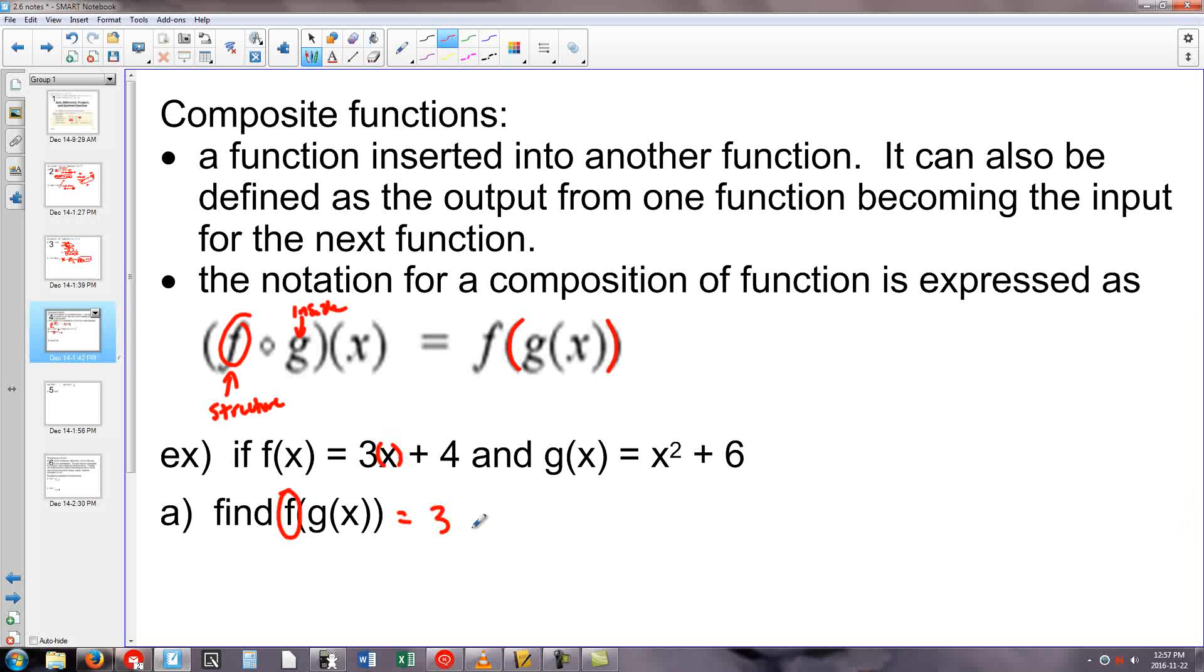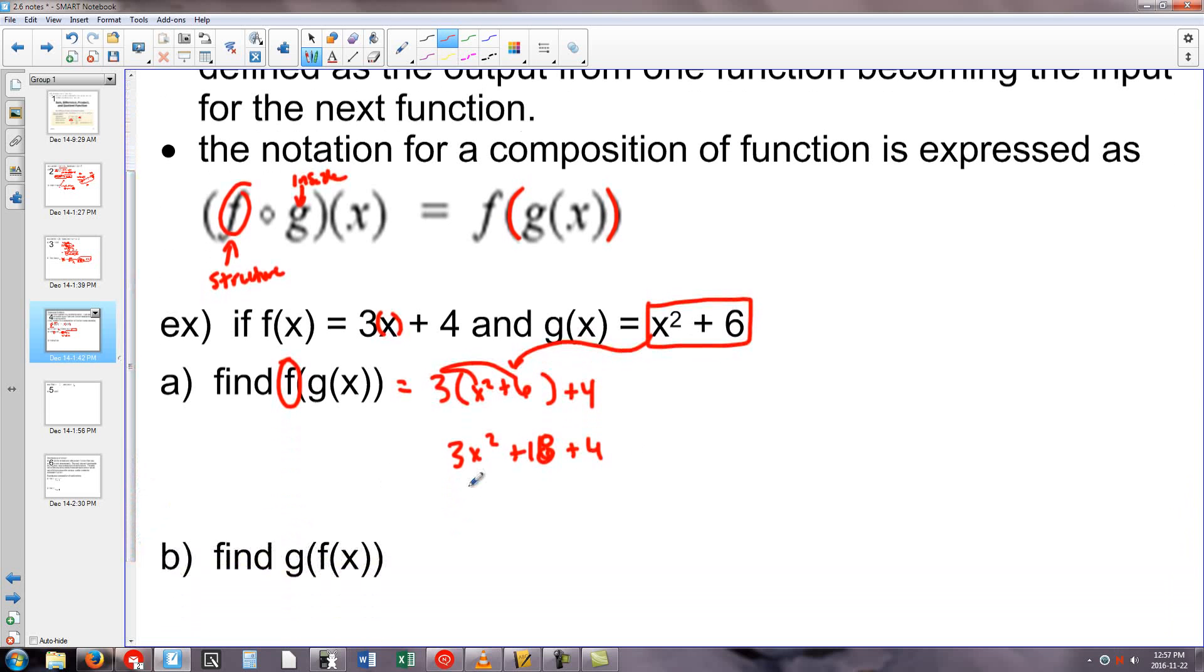I'm going to look at f of x first. It says 3 times x plus 4. I'm going to write 3, and instead of writing x, I'll leave some parentheses plus 4. I don't want x to go in this parentheses. I want g of x, which is the other equation, to go in there. So I'm going to drop x squared plus 6 in. Then it's just basic simplifying. If you distribute, 3x squared plus 18 plus 4, the whole equation, the composition, becomes 3x squared plus 22.